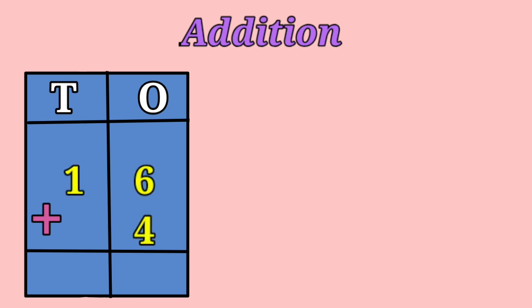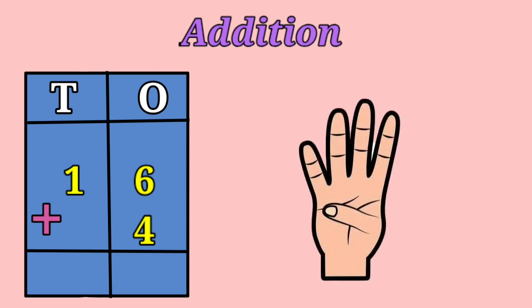Next example, we have 16 plus 4. First, we will add the 1's place, that is 6 plus 4. Children, let's try to do the sum with another method. Let's keep 6 in our mind and count 4 fingers with our hand. 6, 7, 8, 9, 10. So 6 plus 4 equals to 10.